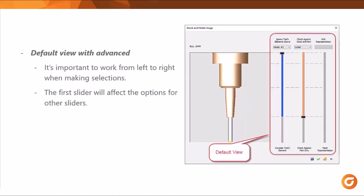Here we're looking at the default view when you have the advanced tab open. You'll set it to advanced, and the only thing you'll see is an access button. Click on that access button, and this is the view you'll see. By default, this window is collapsed, and it's a good start. When you're in this view, we always want to work from left to right with these sliders. You don't want to jump around out of order — the very first column is the one you want to work with first, and once we have that set, we can worry about the rest.